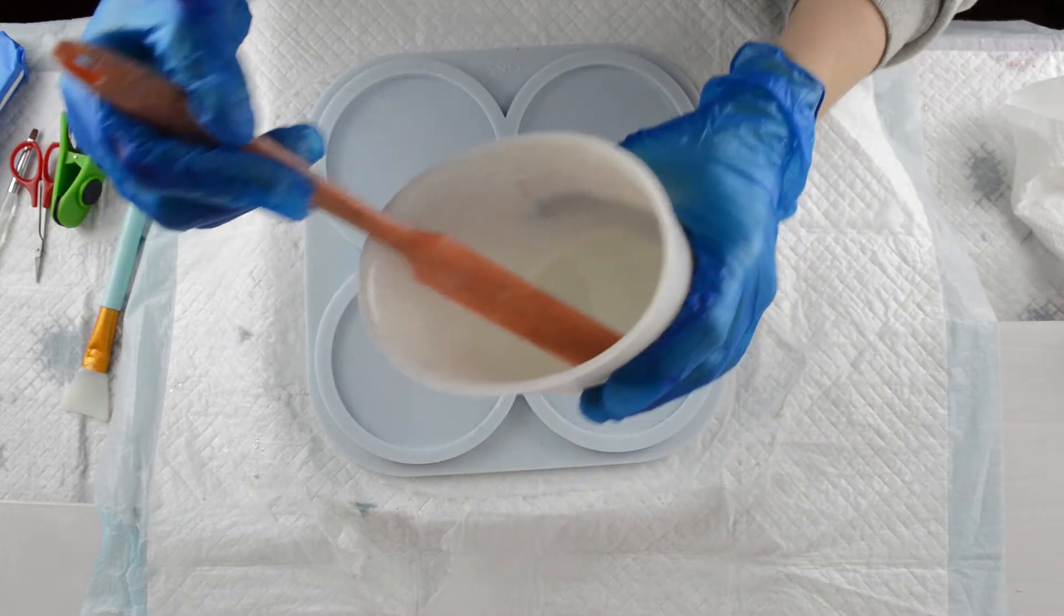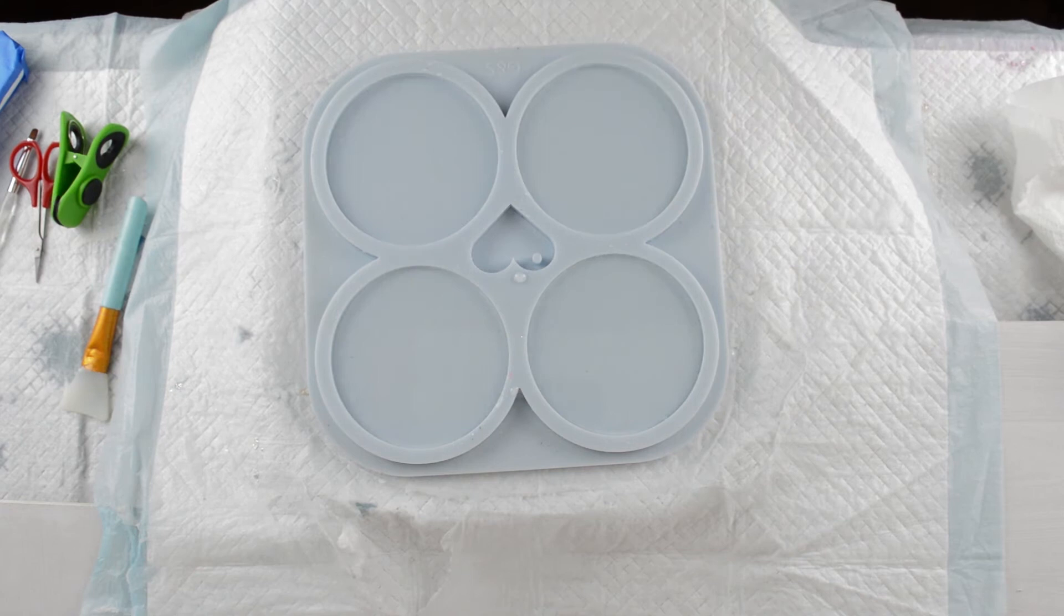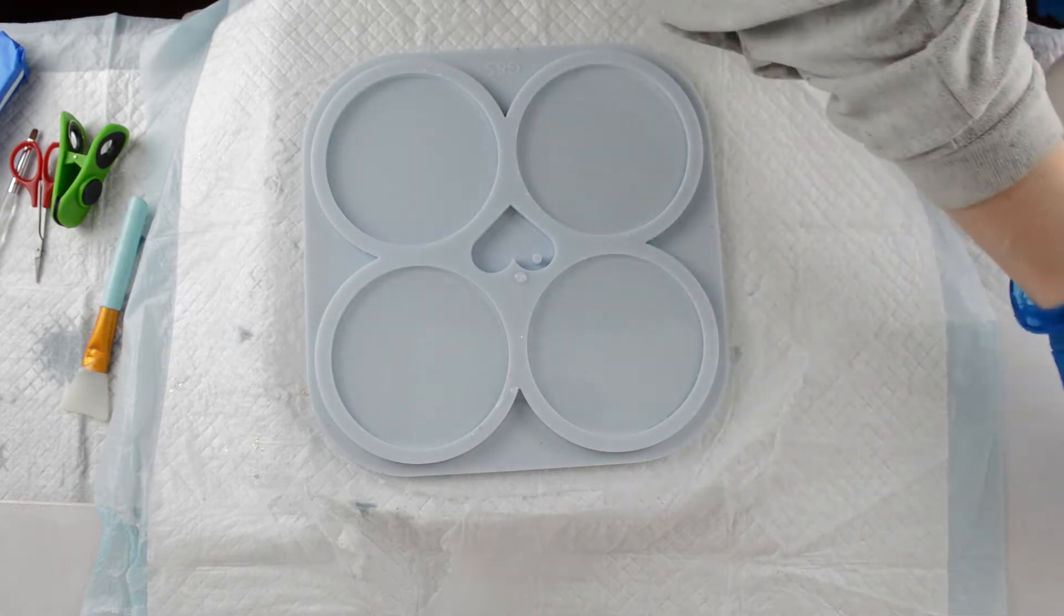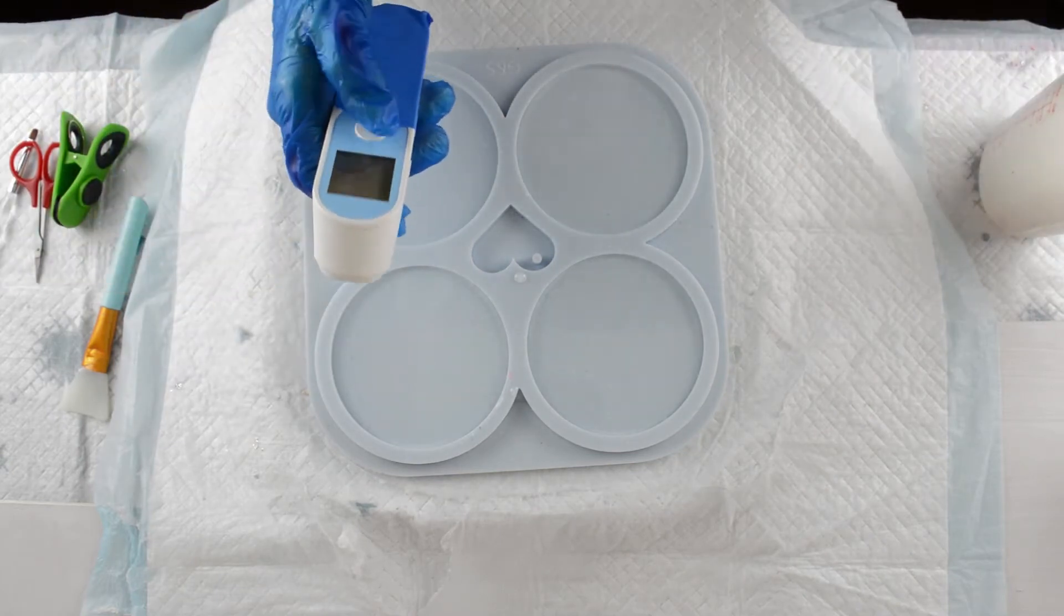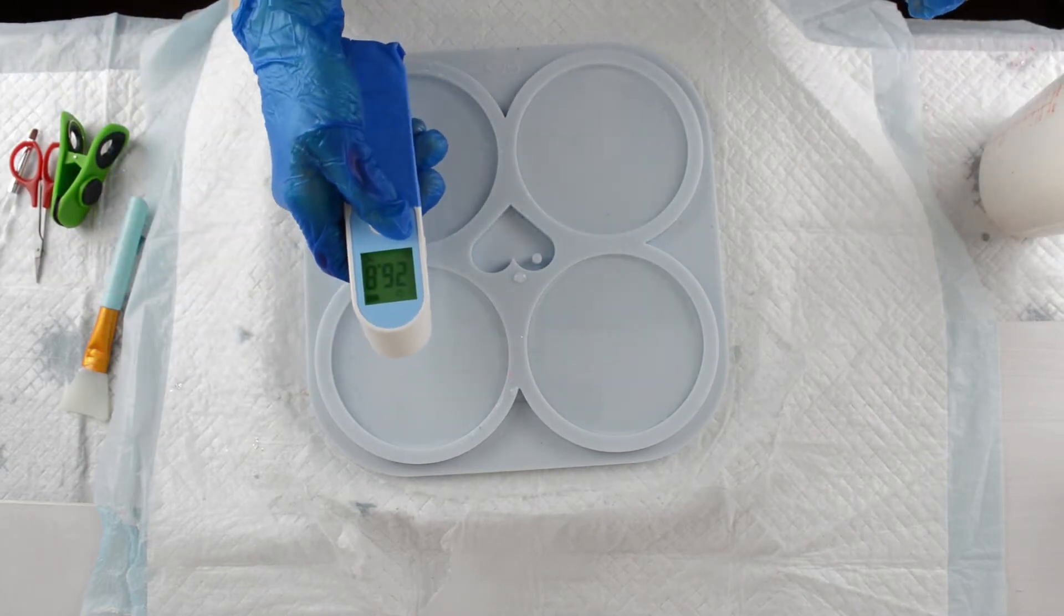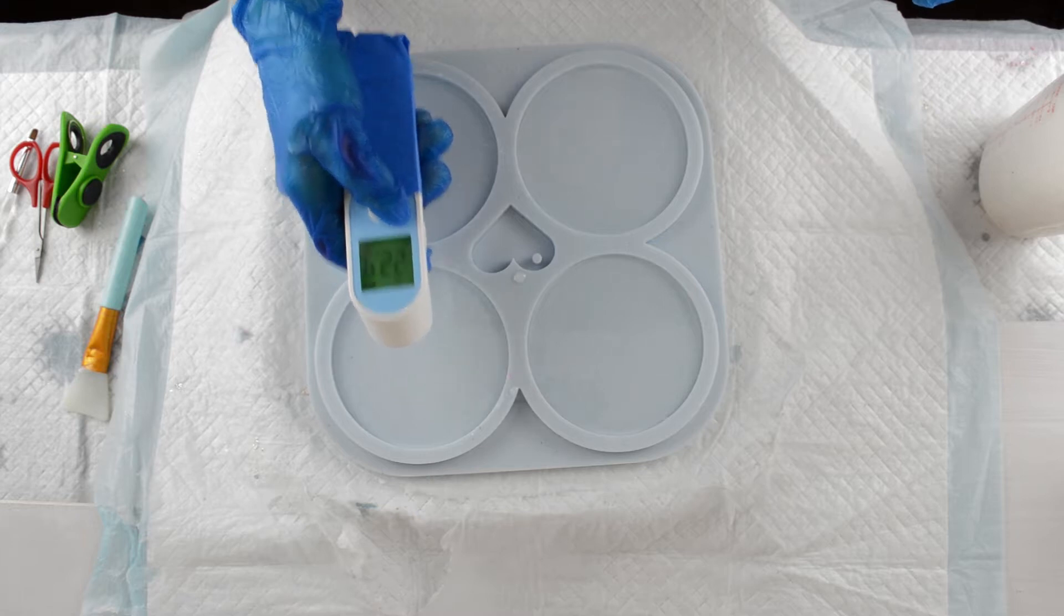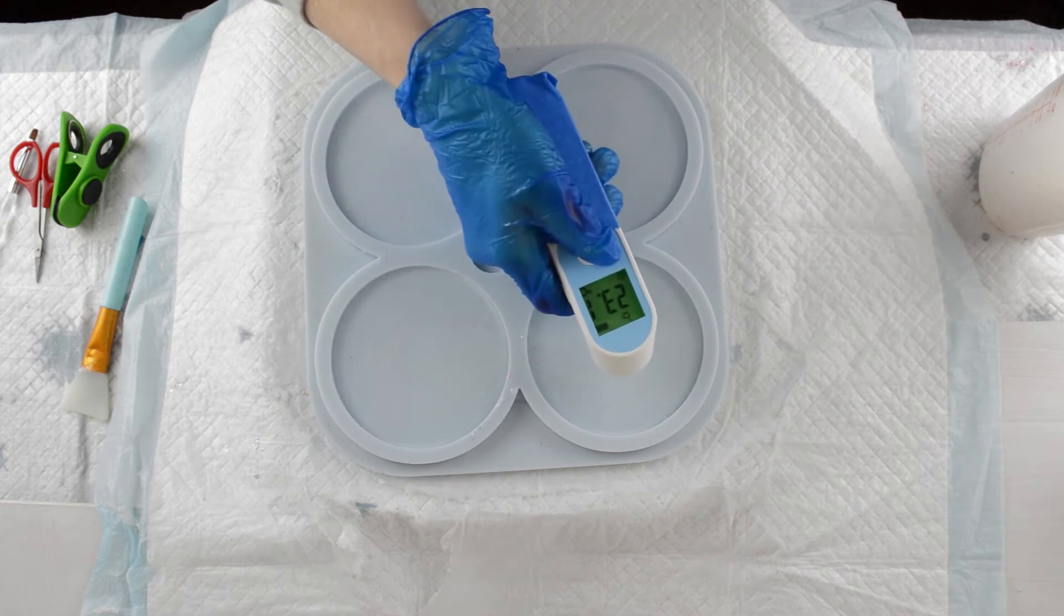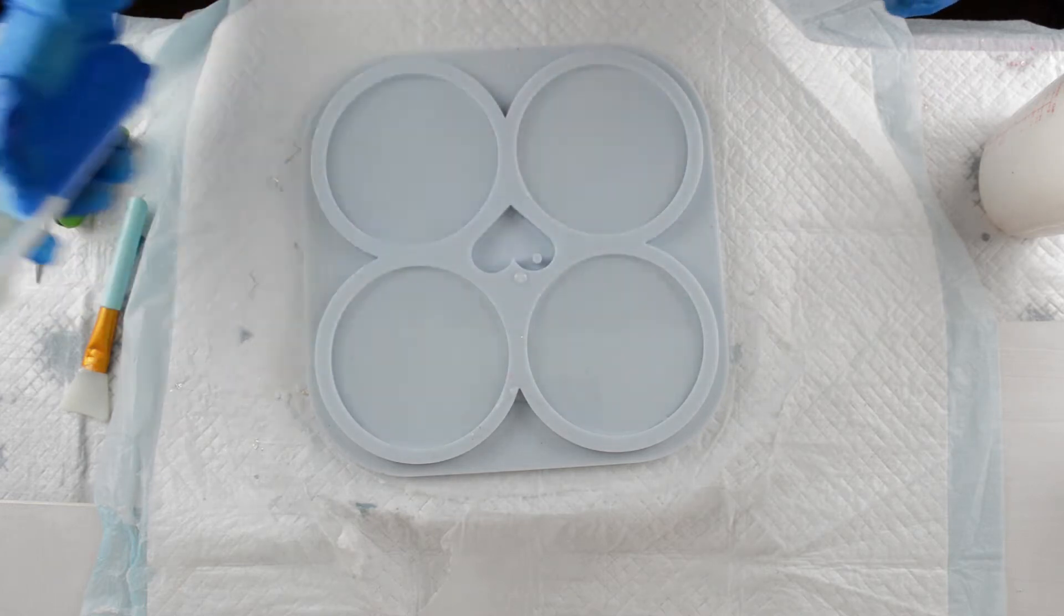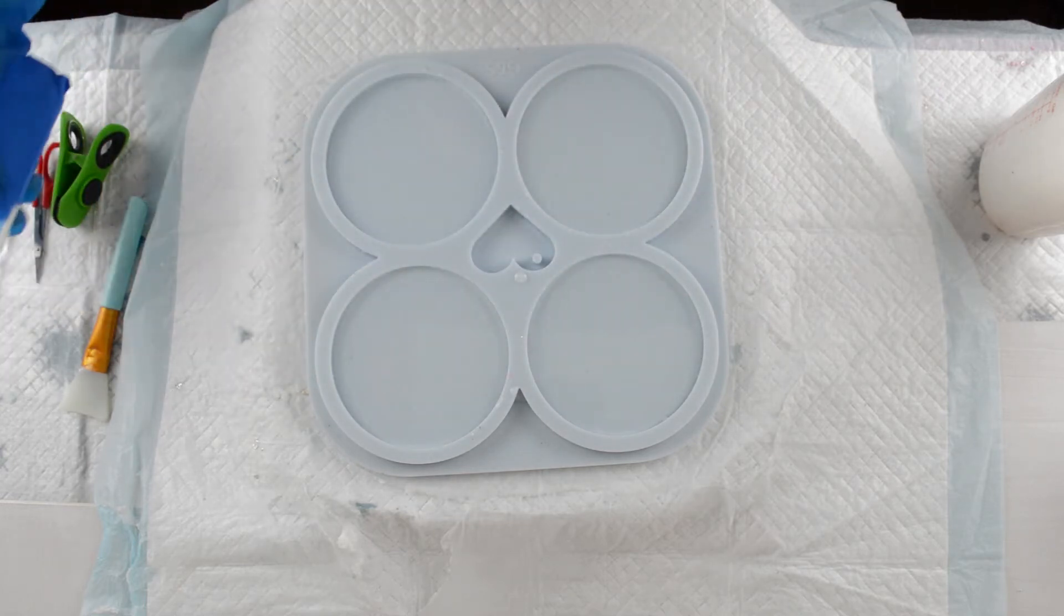Got about 30 grams of resin on one side ready to make the white for the flowers, so we'll check the temperature. Temperature at the moment is 22.9, so about 23 degrees Celsius.